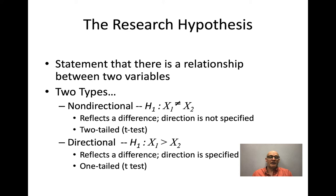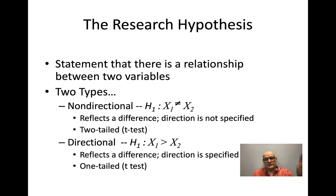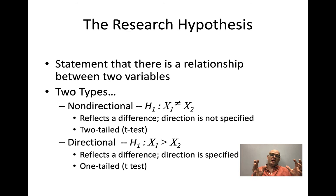A directional research hypothesis says that if we do a certain thing, there will be a positive or negative outcome. It reflects an anticipated direction of that relationship. When we do that, we don't allocate our likelihood of being wrong to both sides of the distribution — we allocate all of the error to one side of the distribution.